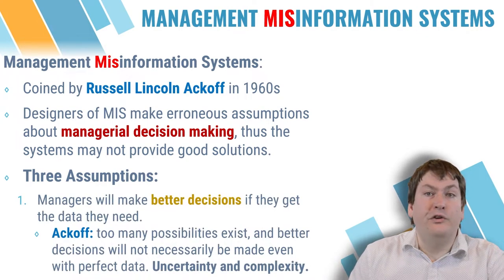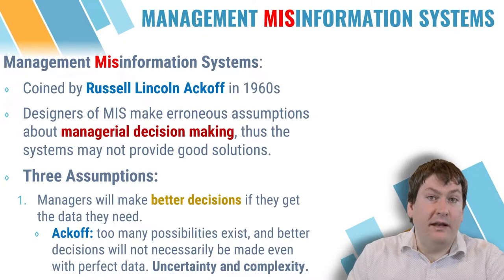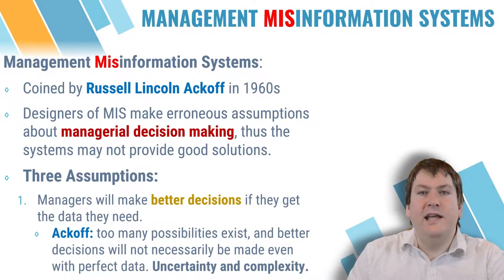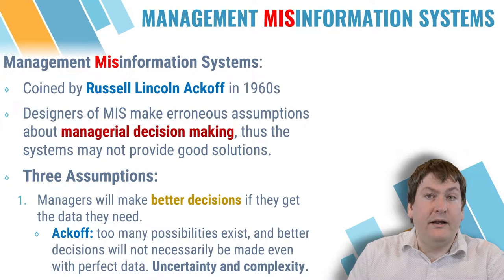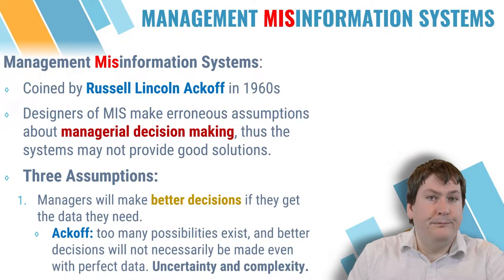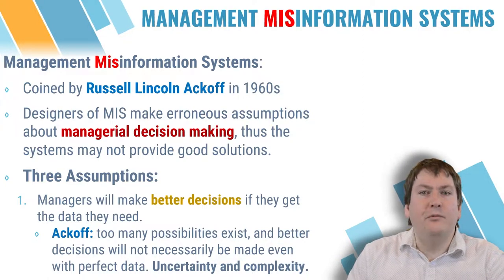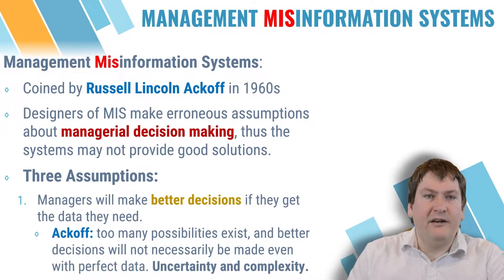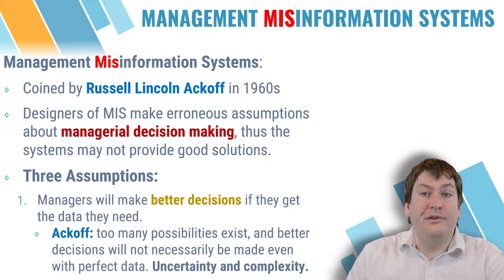The first false assumption was that managers will make better decisions if they get the data they need. More data means better information, and better information means better decisions. However, Ackoff argues that at some point adding more data and information, even if perfect and correct, will stop aiding in decision-making. There's still uncertainty and complexity even when perfect information is available. Take the movie theater example — even with perfect information about the business, industry, and local environment, we wouldn't have been able to predict the COVID-19 pandemic and its significant impact.